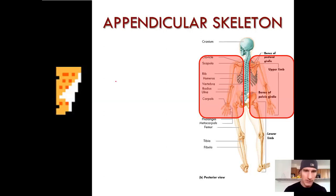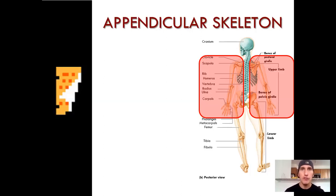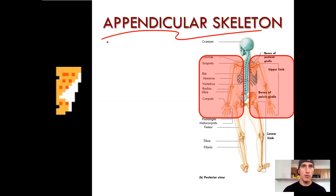We got the technology working and this is part three of our skeletal system tour. If you haven't watched the previous two videos, check them out. We did the thoracic cage in part two, and in part one we did the axial skeleton. Now it's time for us to do the appendicular skeleton — the bones that are appended to our trunk, our limbs.